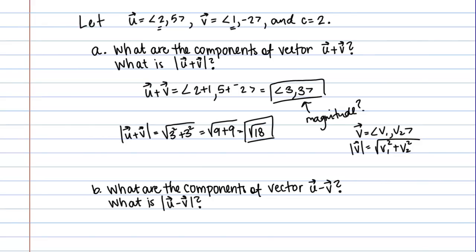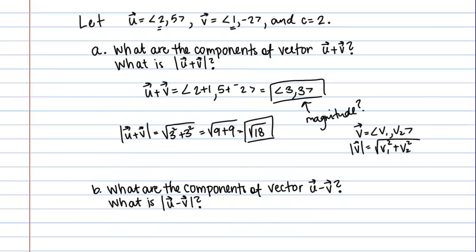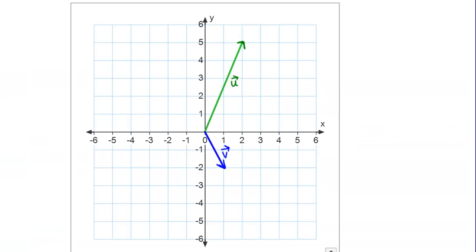Let's just really quickly look at these vectors on a graph just to match up our graphical understanding with our component understanding. Here I've already graphed vectors U and vector V, and this is just coming exactly from the way they were labeled before. U was 2, 5, V was 1, negative 2, and that's what I have here. I have these position vectors.